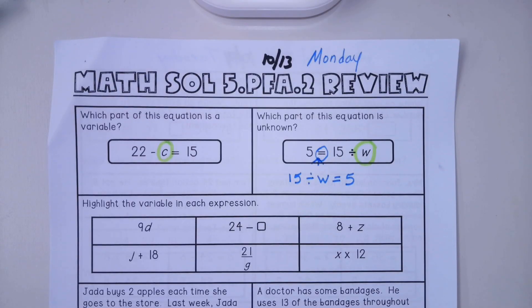Part two. You should be familiar with this. It says highlight the variables in each expression. I'm not going to go through that, but I would practice what does this type of equation mean? 9d. What operation—addition, subtraction, multiplication, or division—does this mean?